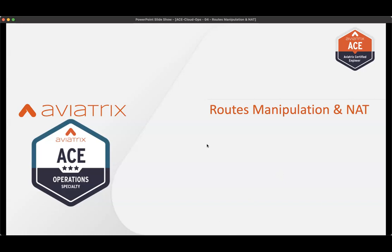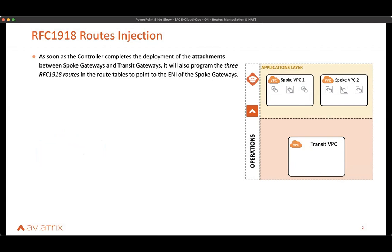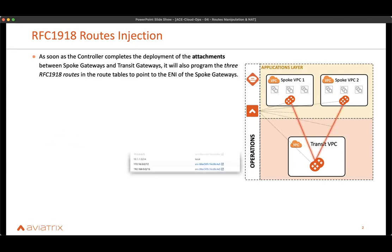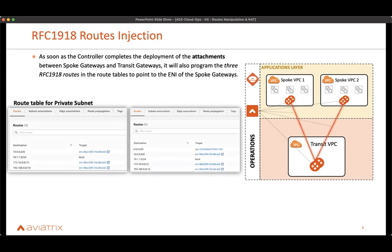Now we will discuss some route manipulation as well as NAT. Let's explain what happens and when do the RFC 1918 routes get programmed. As soon as the controller completes the deployment, whenever you have SPO gateways and transit gateways, we do not manipulate the VPC routing table at that point in time. We only manipulate it when we program the attachments. As soon as we attach the SPO to the transit, we automatically instantiate the RFC 1918 routes, which are the 10/8, the 172.16/12, and the 192.168/16, pointing to the ENI of the SPO gateway.